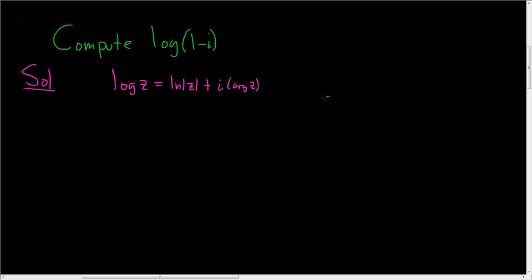And if you've forgotten what the argument of z is, argz, it's a set, but it can be written this way. It's theta plus 2k pi, where k is an integer.